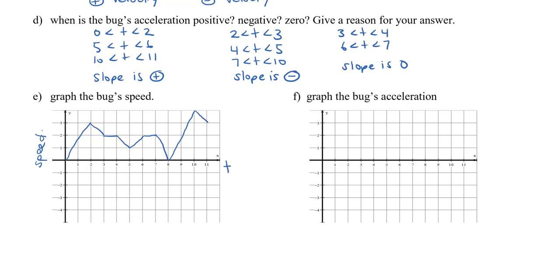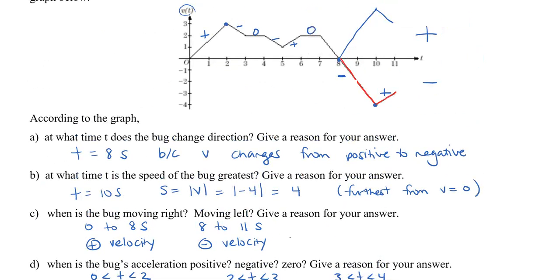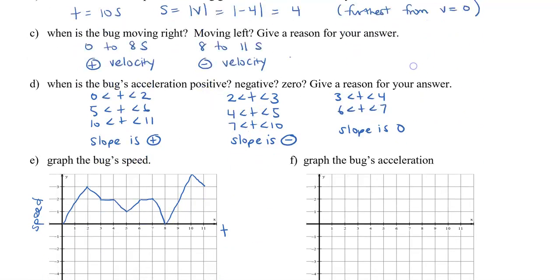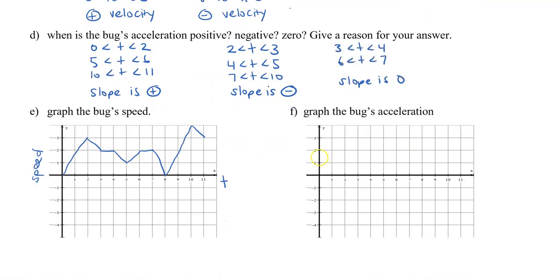Lastly, we're going to graph the bug's acceleration. So, we already looked at where it's positive and negative, but now we're going to go a little bit further. What we need to do is we're going to draw some triangles to create some slopes. Here's the first slope we know, and we can see that the rise here is 3, and the run is 2, which means that the acceleration from 0 to 2 seconds is 3 over 2, which is 1.5.